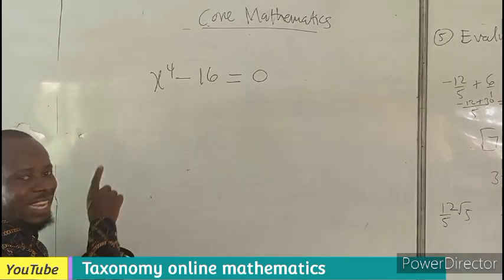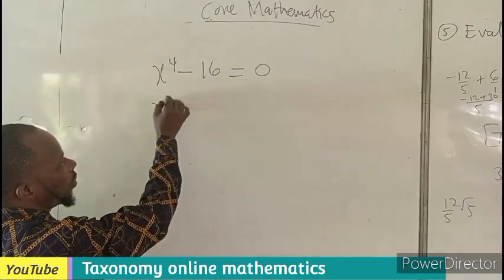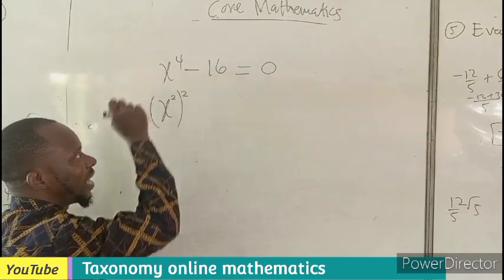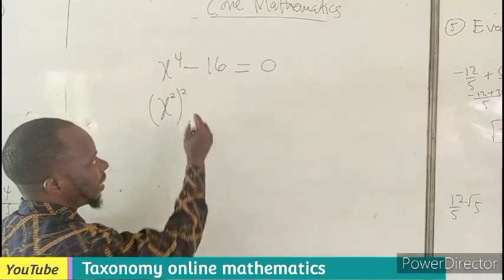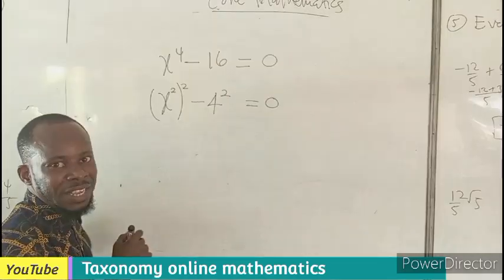We can rewrite this as a difference of two squares. As in x exponent 2 all squared will give us x exponent 4, right? Then minus 4 exponent 2. So this will also give us 16.